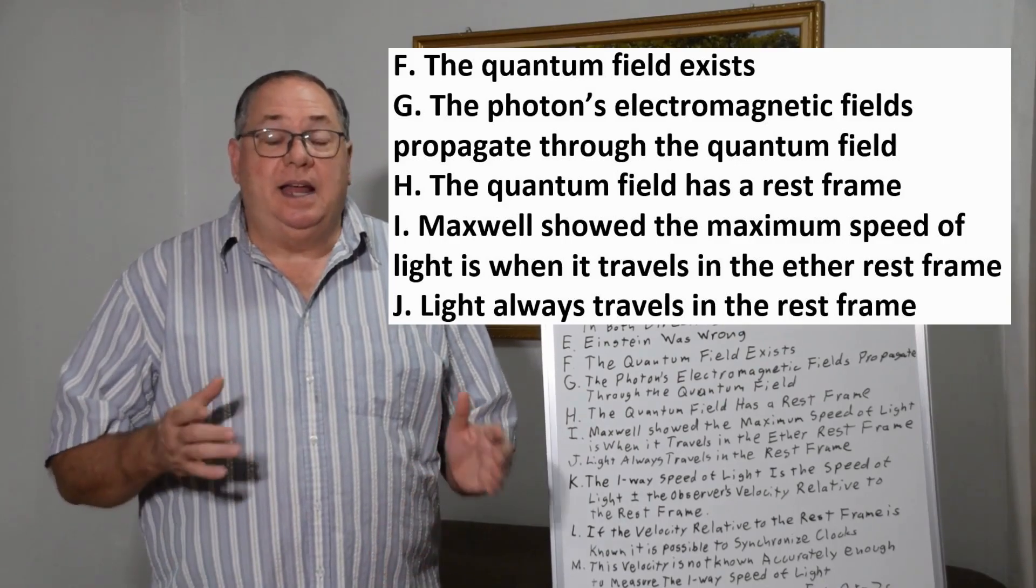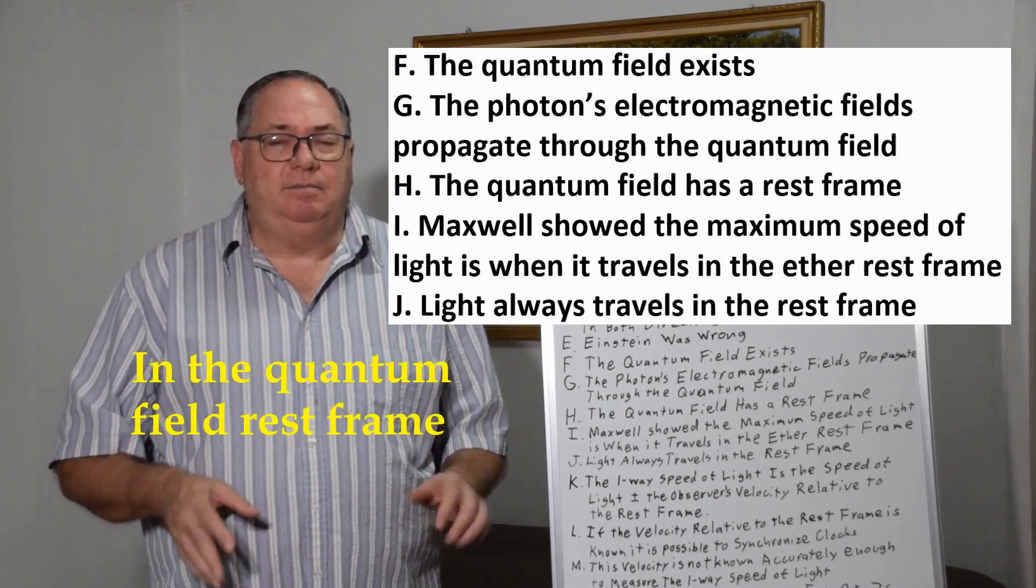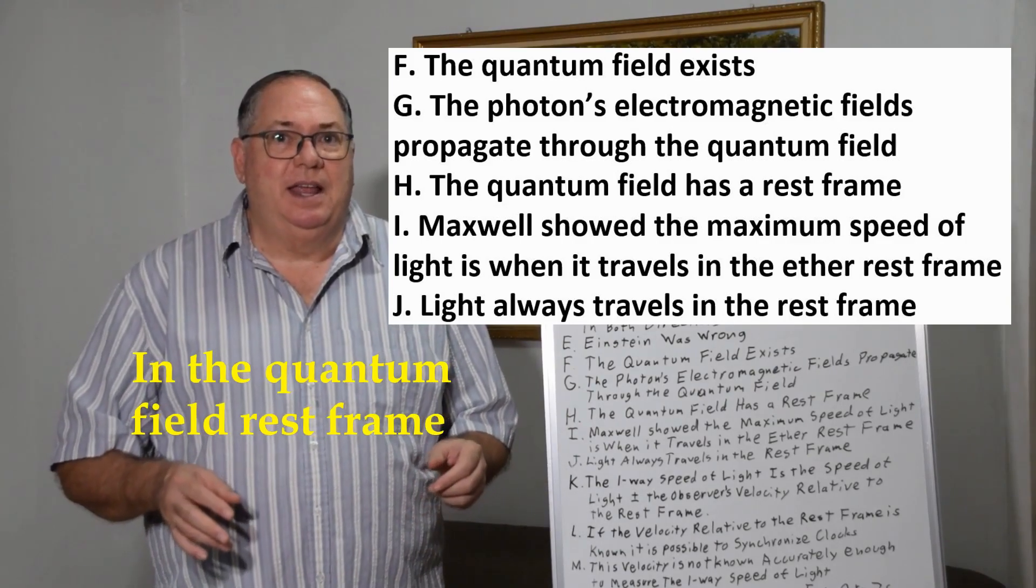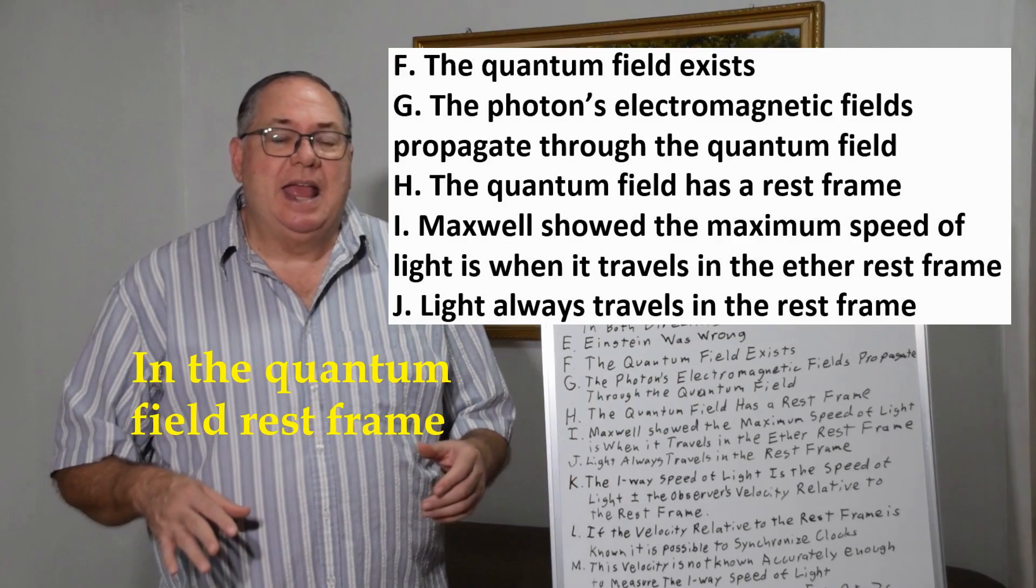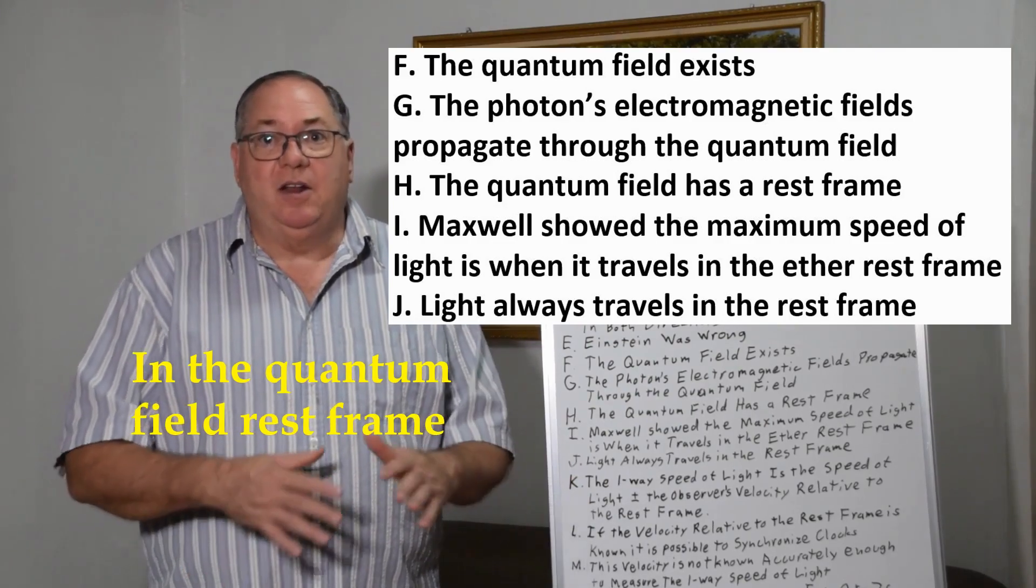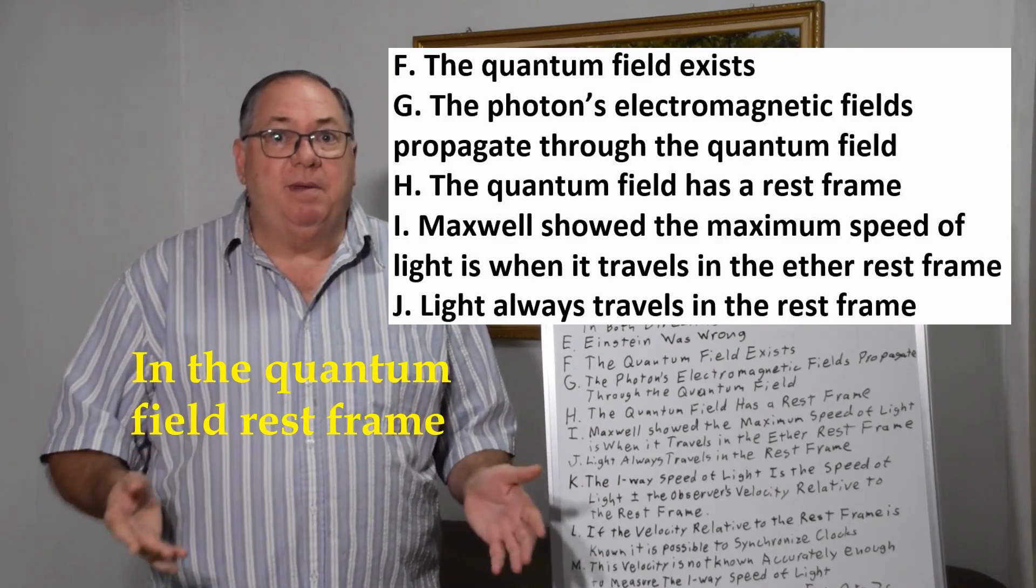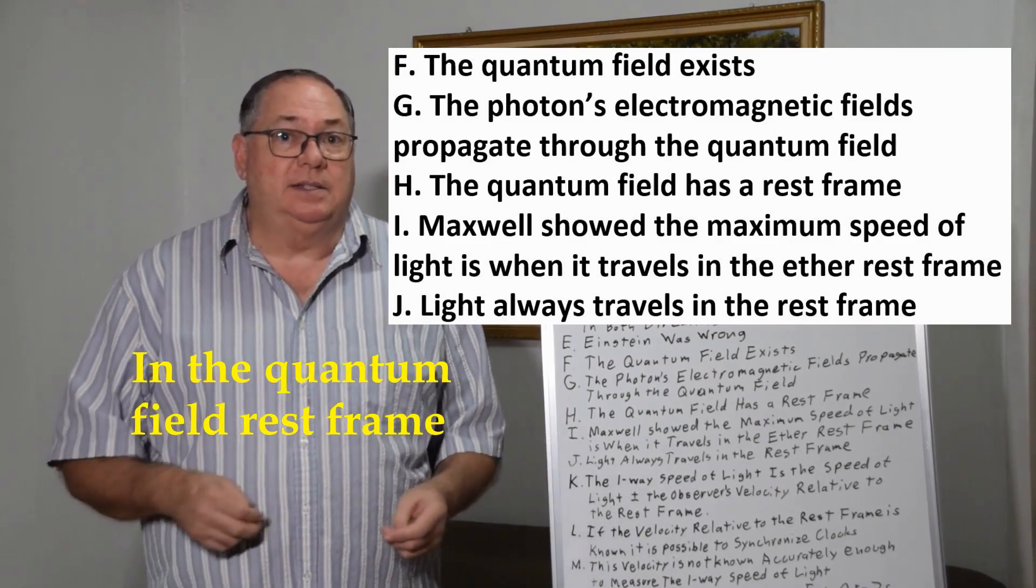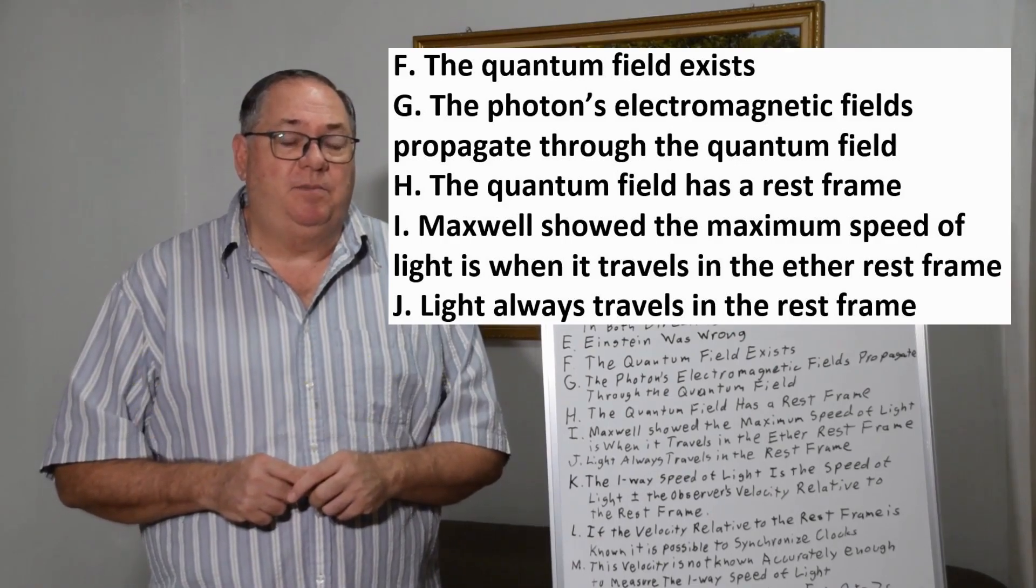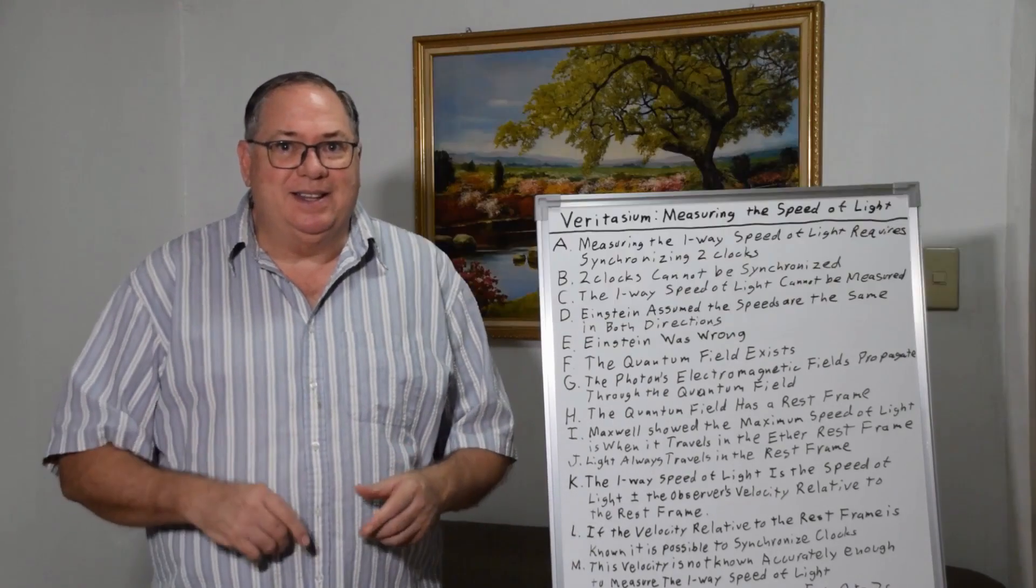Once a photon leaves the source, it's propagating its electric and magnetic field in the rest frame as it moves. And its speed is always the speed of light c, under special relativity, where there's no mass locally. And so that gives you a constant speed of light in all directions, because the permittivity and permeability are constant in all directions. With that information, I'll play the second clip.